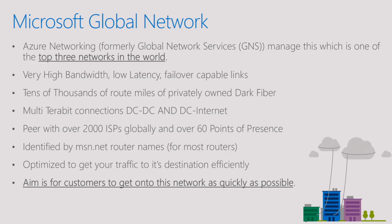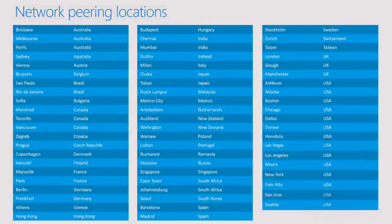Most of our router names have msn.net on the router — Microsoft network. The aim is to get your traffic to that network as quickly as possible with as little interference as possible, and when you get it on that network, we can get it to where it needs to go, wherever that may be in the world. We have a wide spread of countries and locations where we appear to peer. Some locations have multiple peer points — London, for example, has quite a few. In the US there are 14 locations where we'll pick that traffic up from ISPs.